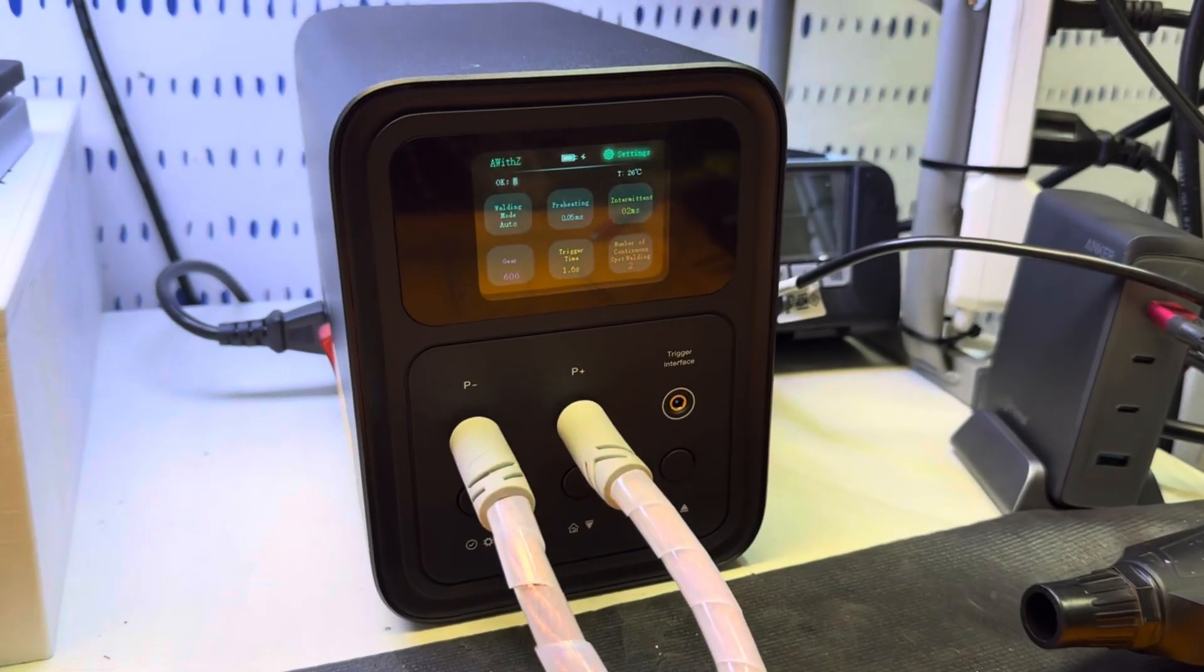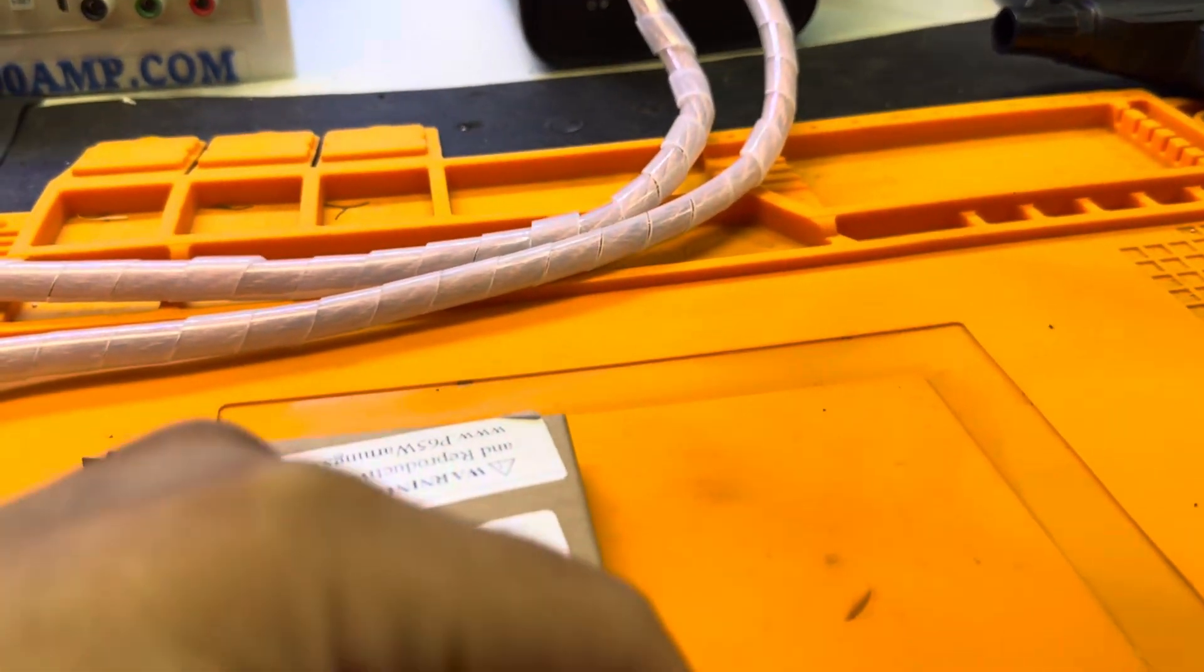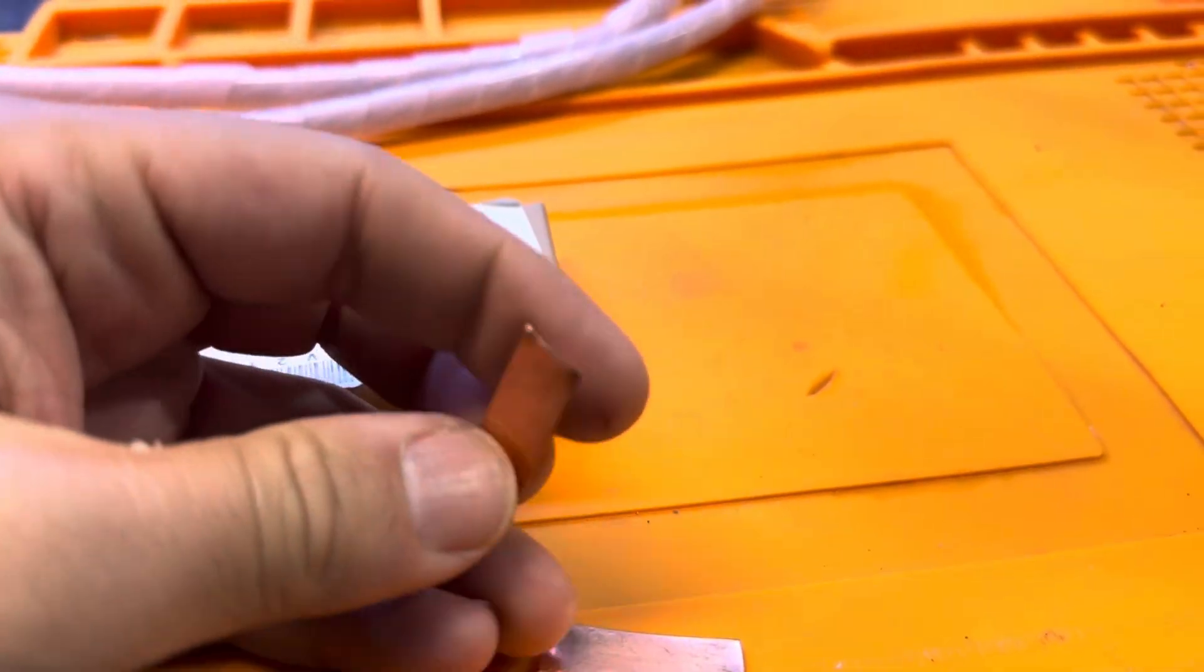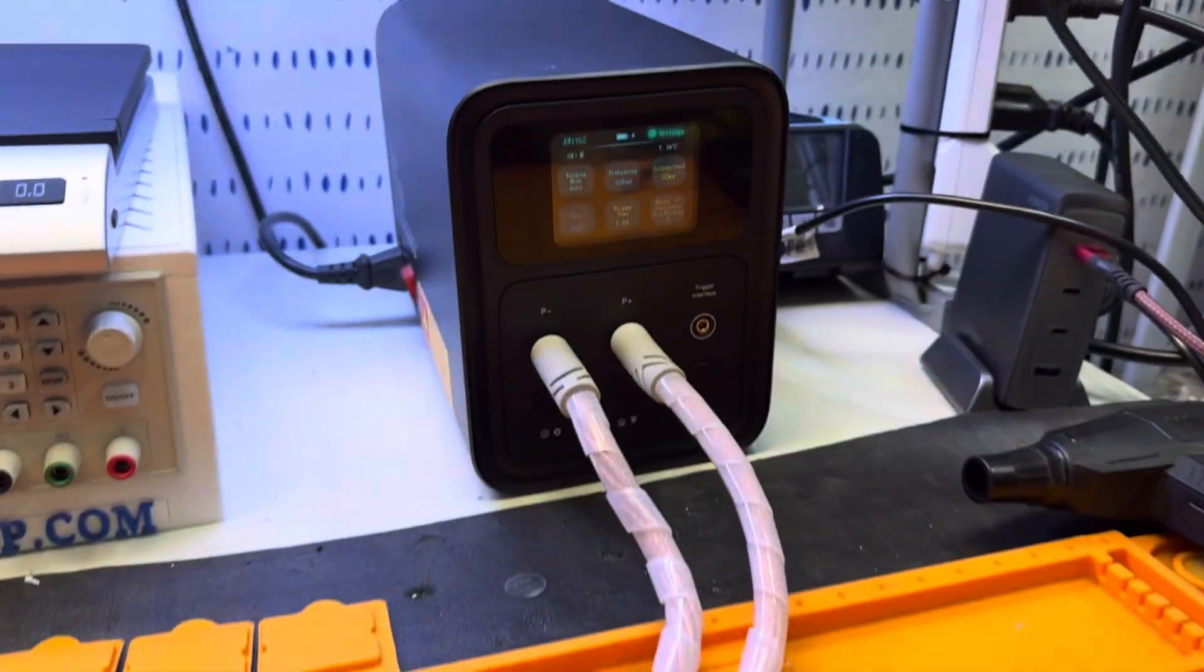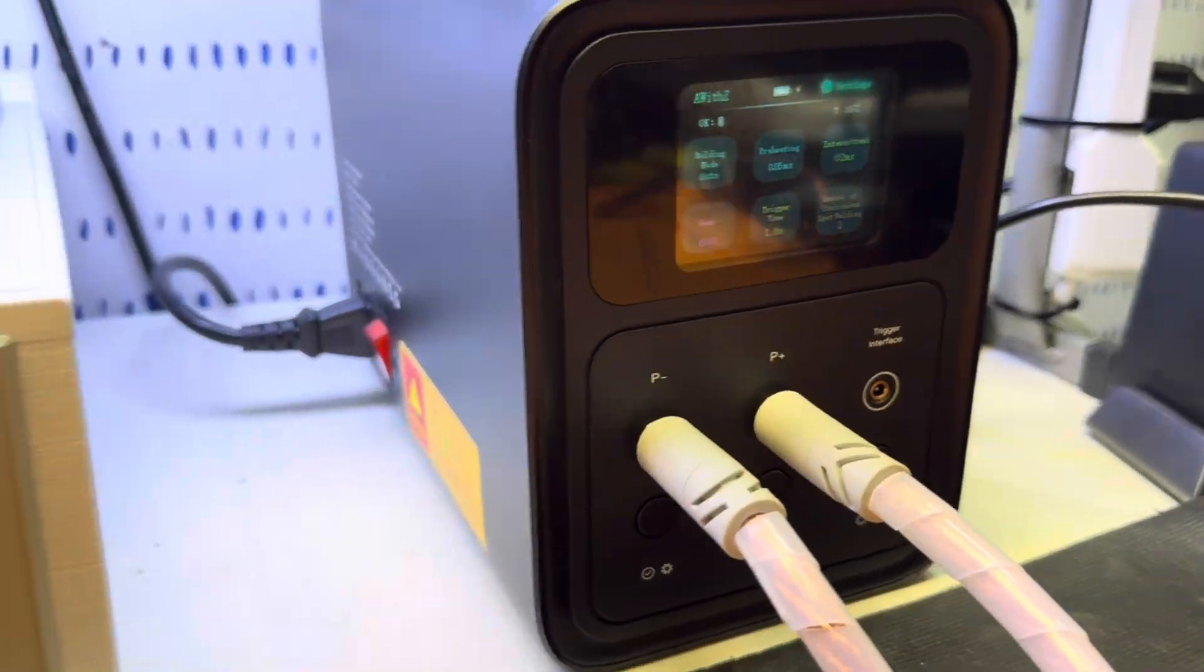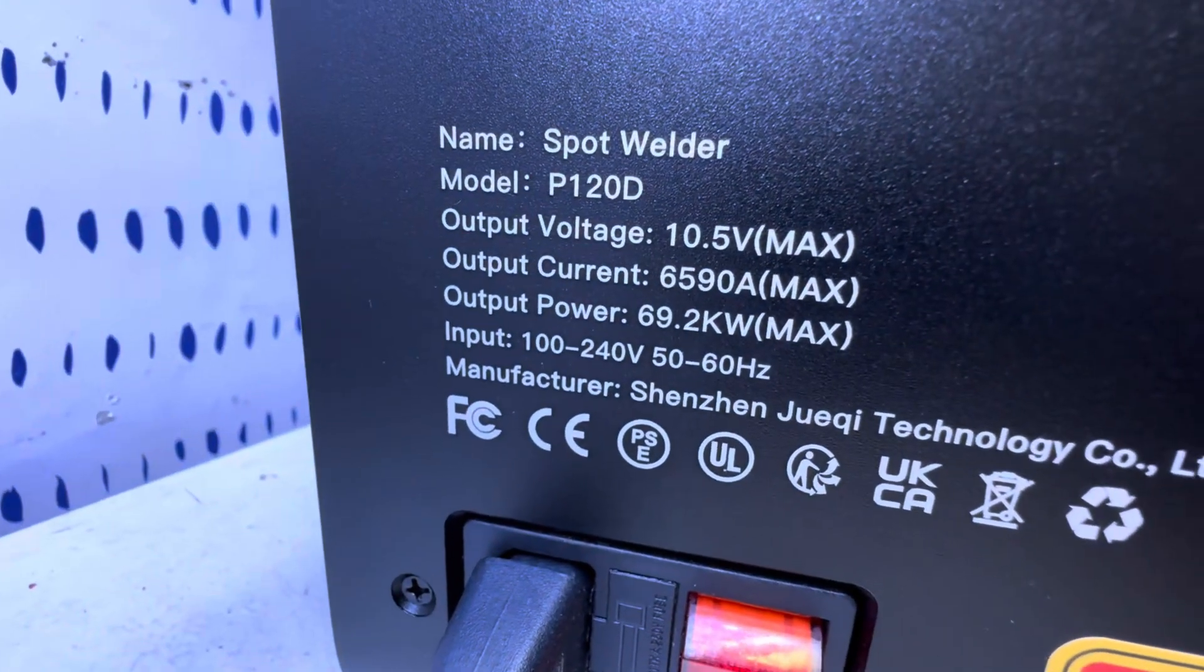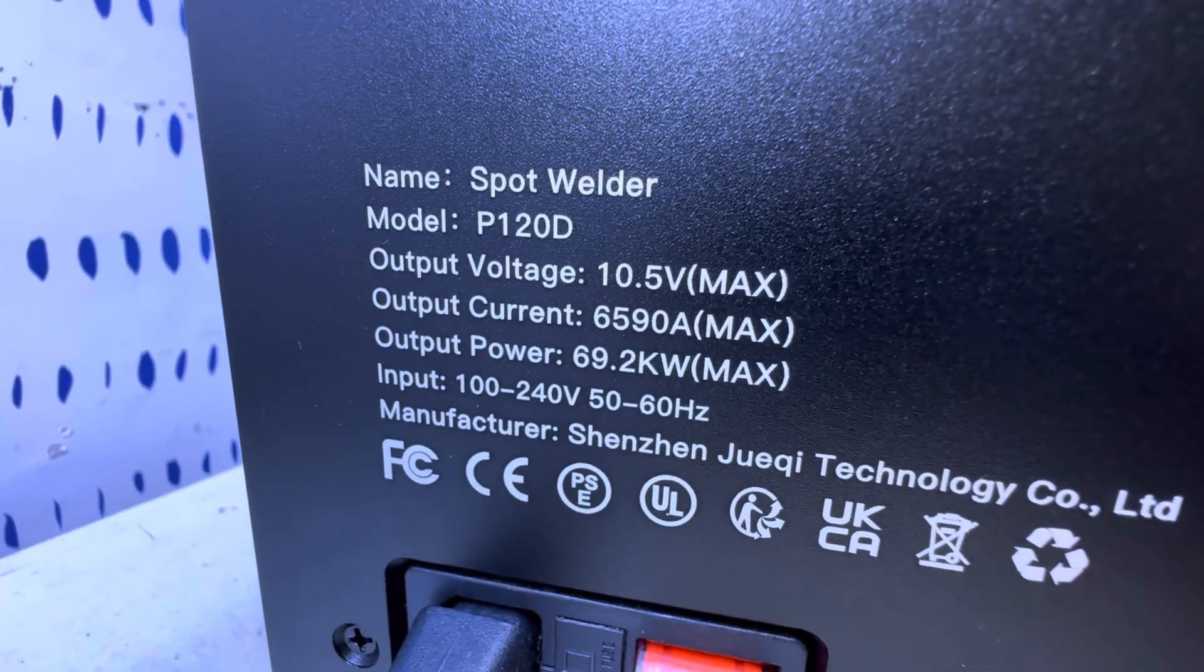Alright guys, let's make a video from a question that somebody asked me. If we can weld a copper 0.5 with the AWIDP P120D. This is the top of the line from AWIDP. If you see here, that's the model.